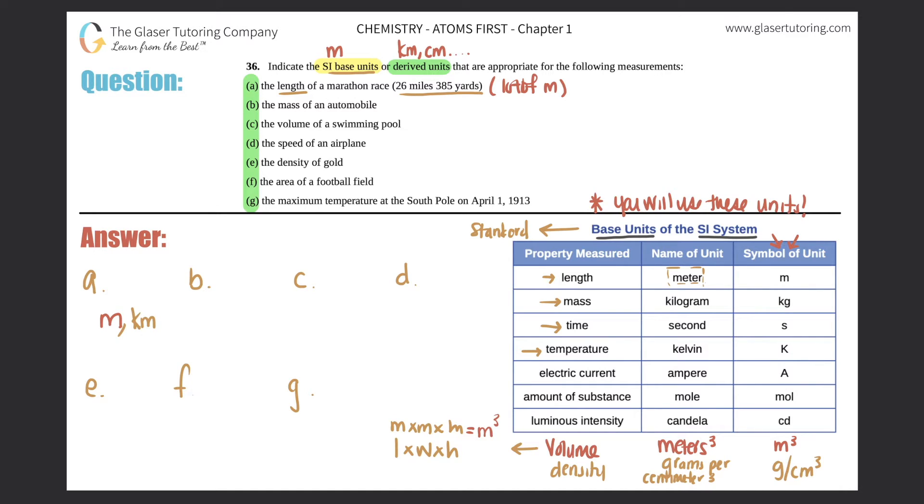B, the mass of an automobile. The mass is kilograms, already the standard unit, so this is perfect: kg. C, the volume of a swimming pool. Now we know that the standard unit for volume is meters cubed, so that would be the unit that you would use to find out the volume of a swimming pool.